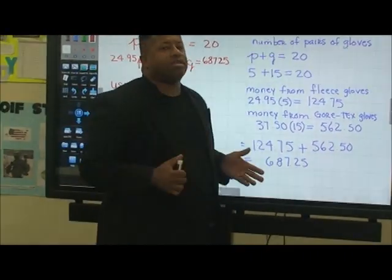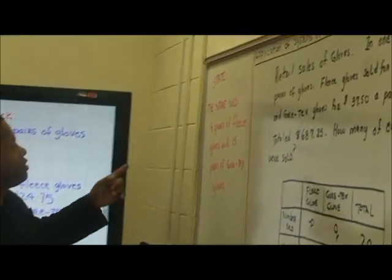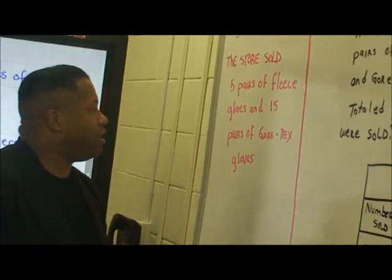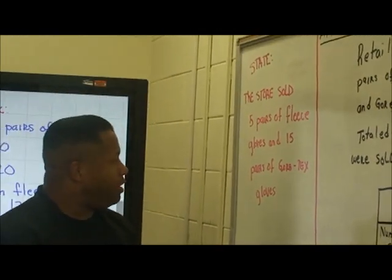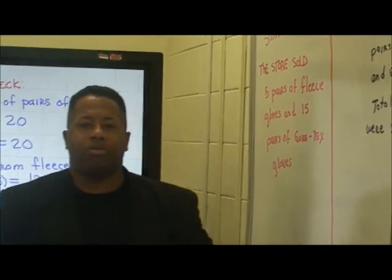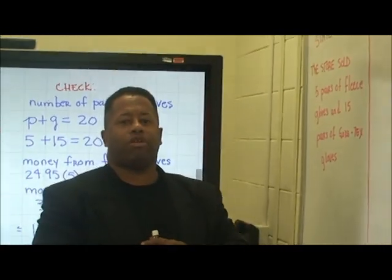Now let's state our business. Let's interpret the results. The store sold altogether five pairs of fleece gloves and 15 pairs of Gore-Tex gloves. And this is how we solve this system of equations.